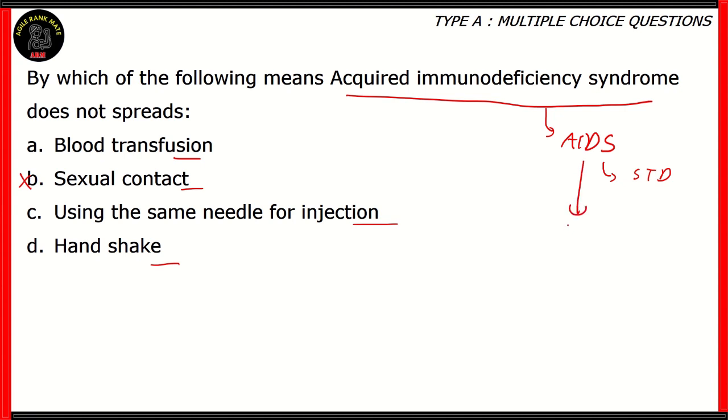Now another notable method by which AIDS can be transferred is when a person transfers fluids from himself to another or gets fluid from another person. So transfer of fluids, especially blood, can result in someone contracting AIDS. So therefore, option A and option C are also ways by which AIDS can spread, which means both options are incorrect. The right answer is option D, handshake.